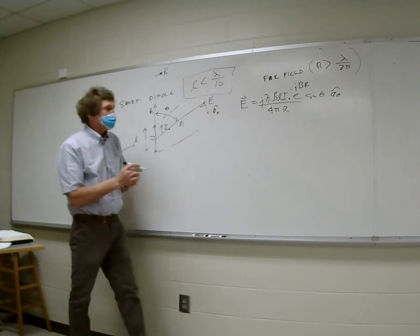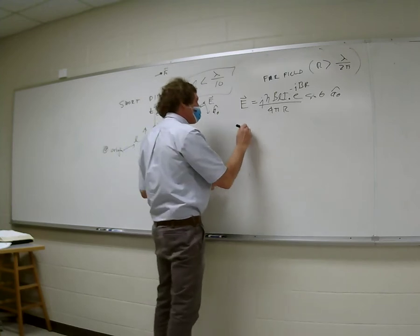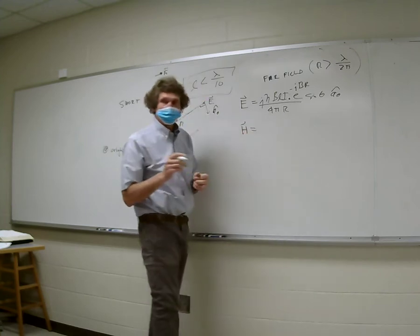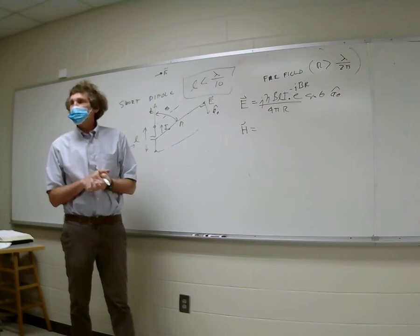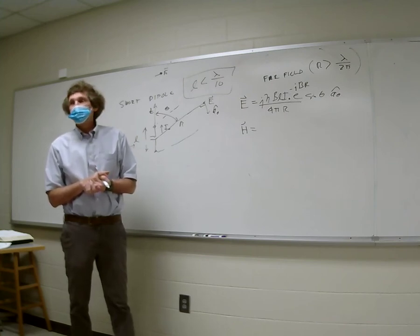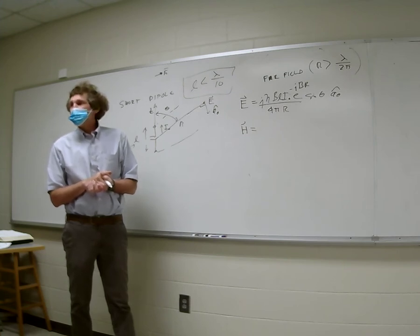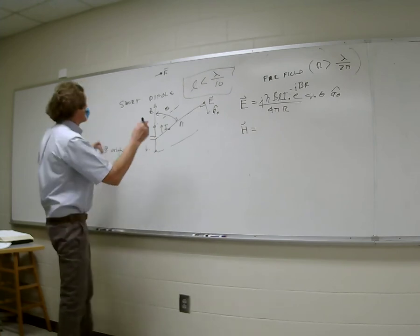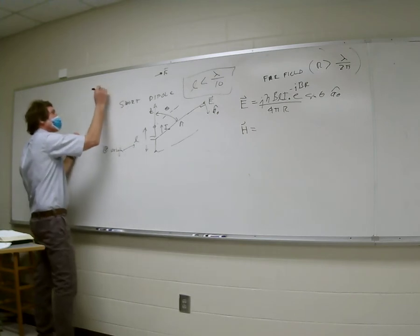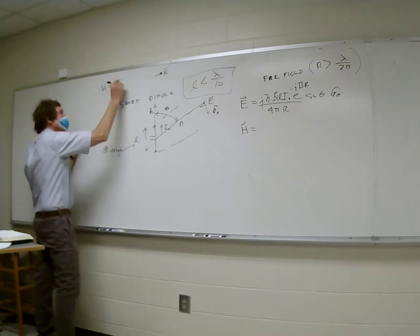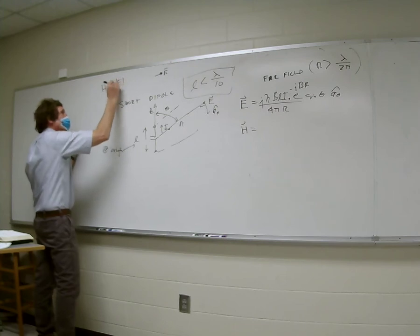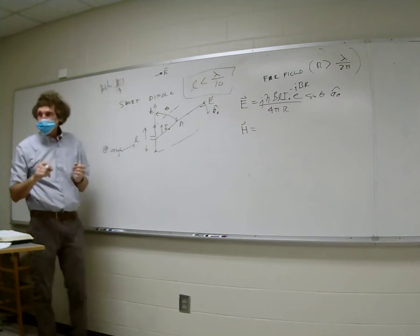What would the H field be if I wanted it? If I have the E field and the R field, how do I get H? Let's assume we're in free space. H is equal to E over η in the general sense for propagating fields. So if we have E, we divide by η.